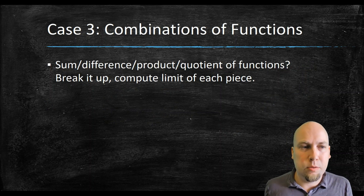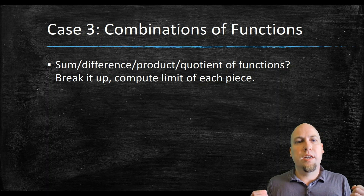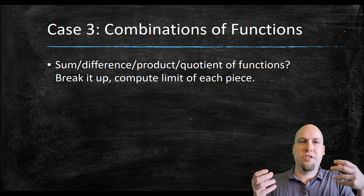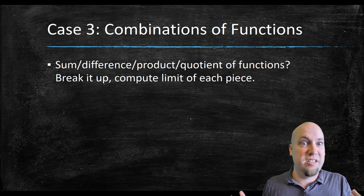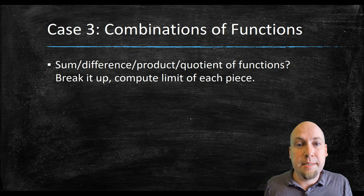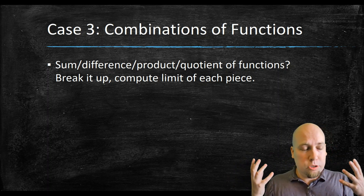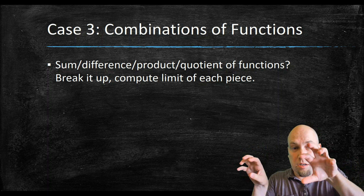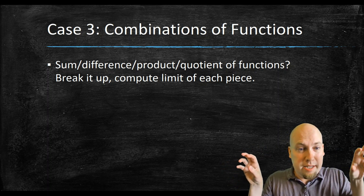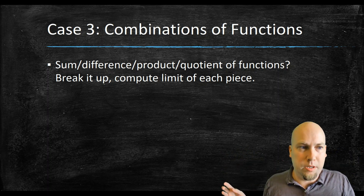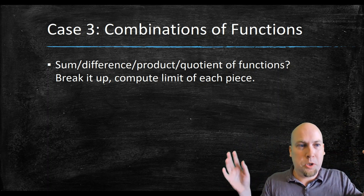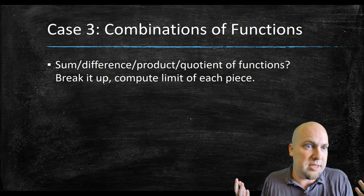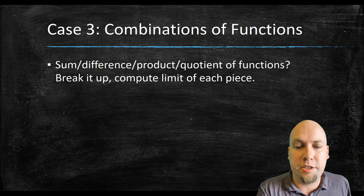Our last technique is computing limits of combinations of functions. Lots of limits we want to compute are additions, subtractions, products, compositions, or divisions of other nice functions — nice limits that we do know how to compute. The short answer is you just break the limit down into individual limits. As long as those individual limits exist, you can add them up or multiply them naively how you would like to. Just split up the limit over the sum, or the product, or the division, or the composition — and it works as long as each individual piece actually exists.